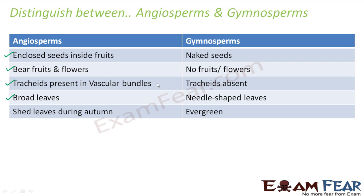Because of the needle-shaped leaves, gymnosperms can adjust and survive in adverse conditions. Angiosperms shed leaves during autumn, whereas gymnosperms are evergreen — they do not shed their leaves and can adjust to any adverse situation.